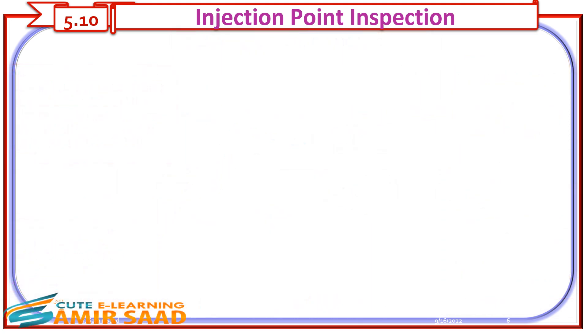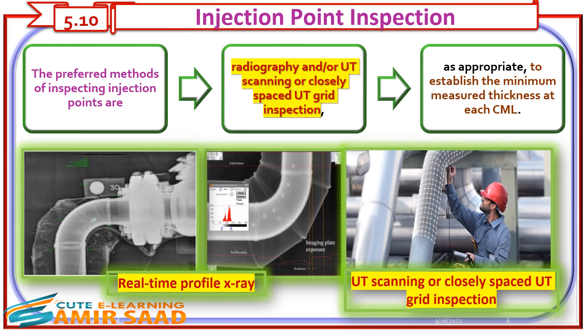The preferred methods of inspecting Injection Points are radiography and/or UT scanning or closely spaced UT grid inspection, as appropriate, to establish the minimum measured thickness at each CML. Close-grid ultrasonic measurements or scanning may be used, as long as temperatures are appropriate.